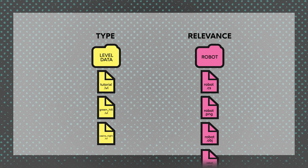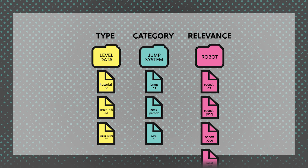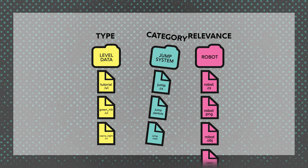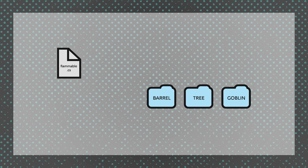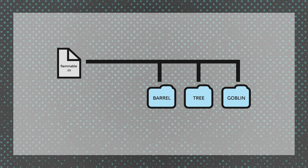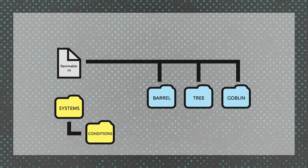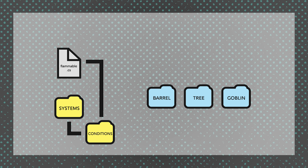Chances are you're probably going to use a mix of these two approaches. Some assets make more sense to be stored by type, while other mechanics you may want to have organized by their relevant files. There's also a third option to consider: file categorization. It's kind of an in-between approach that leans a little bit more toward relevance. This makes a lot of sense if you're using something like a very systems-driven game or something with procedural generation, where a given class or another asset might apply to many different objects within your game.